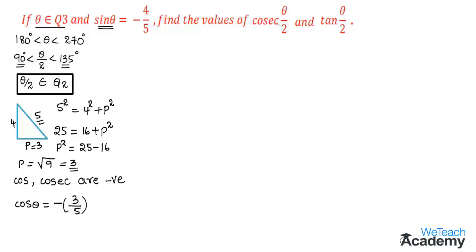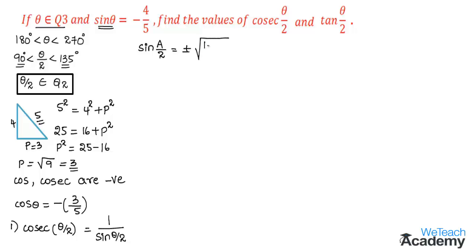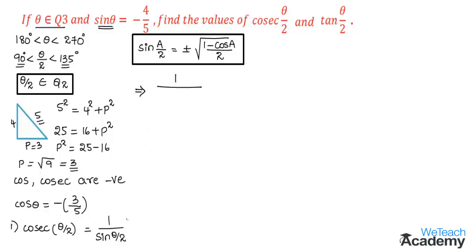Now let us find the value of cosecant theta by 2. Cosecant theta by 2 can be written as 1 by sin theta by 2. Using the half-angle formula, sin a by 2 equals plus or minus under root of 1 minus cos a, all divided by 2. Replacing a with theta, sin theta by 2 equals under root of 1 minus cos theta, divided by 2.